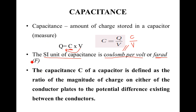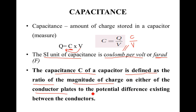By definition, from the formula C = Q/V, we can write the definition in words: the capacitance of a capacitor is defined as the ratio of the magnitude of the charge on the conducting plates to the potential difference existing between the conductors.